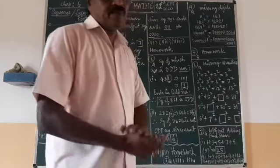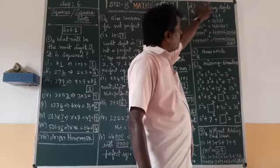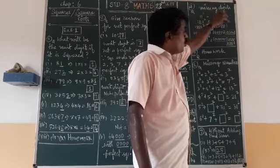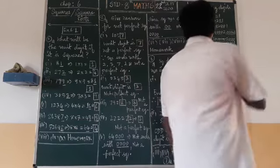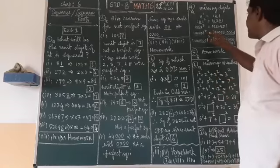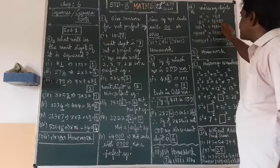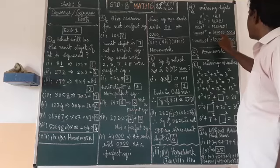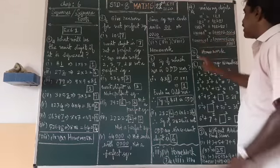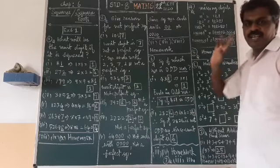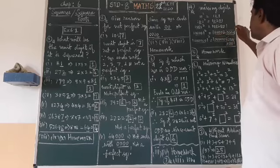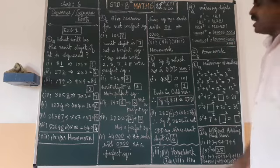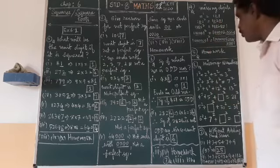The fourth question asks you to find the missing digit by observing a pattern. The pattern is: 11 squared = 121; 101 squared = 10201; 1001 squared = 1002001. So for 4 zeros, 4001 squared follows the same pattern. If 1 zero gives 1 on either side, and 2 zeros gives 2 on either side, then 4 zeros gives 4 on either side. So 4001 squared = 16024001. The fifth problem is homework.